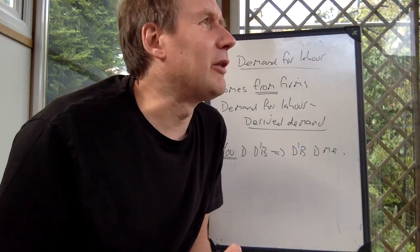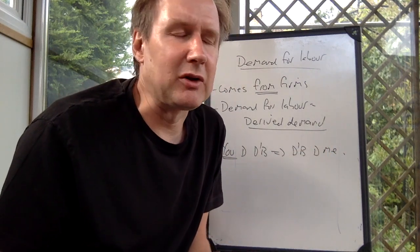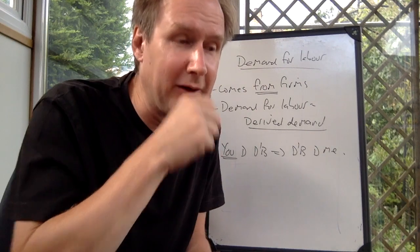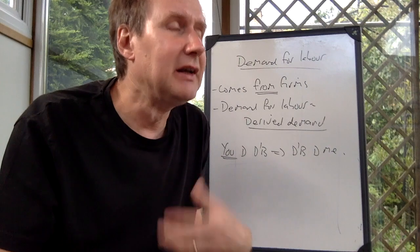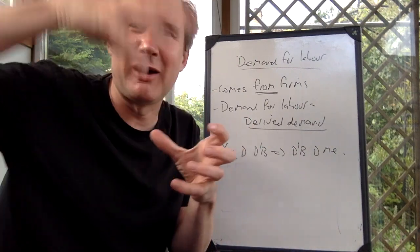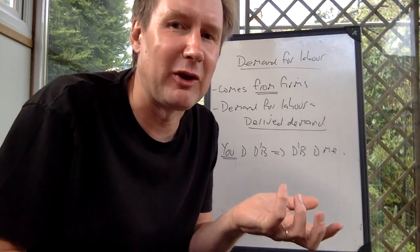You can see that in other markets as well. Because there is the demand for steak to eat, restaurants then demand cows. So a derived demand is where the demand for one thing leads to a demand for the other.